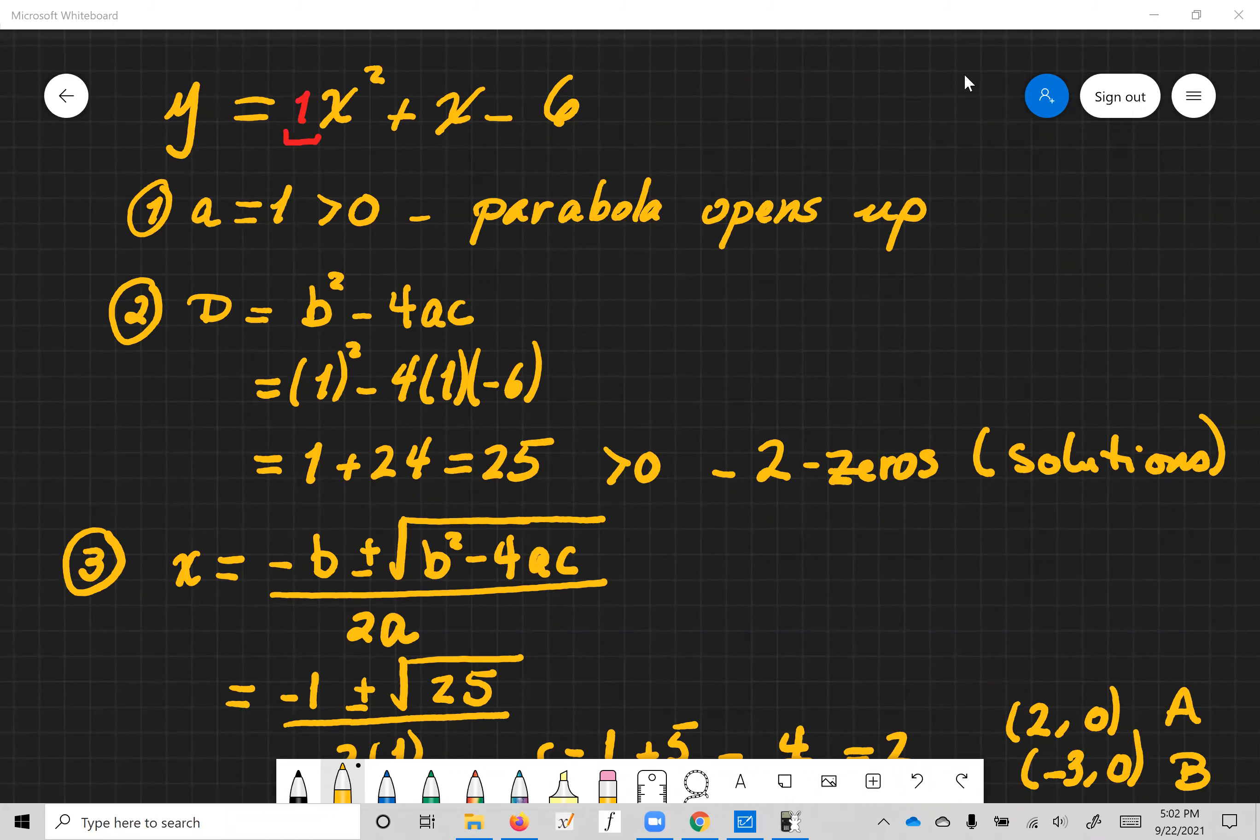Okay, in this video we will analyze the parabola y equals x squared plus x minus 6. First thing we notice is that a, which is right here in red, one is positive, so the parabola will open up.